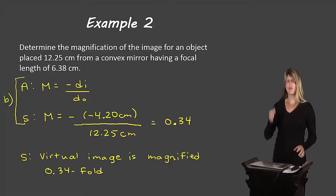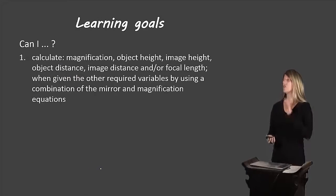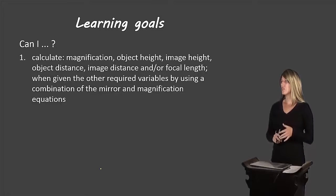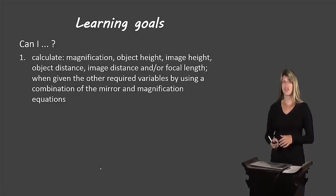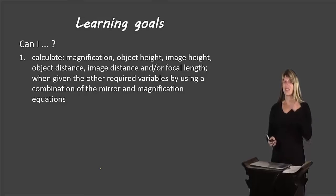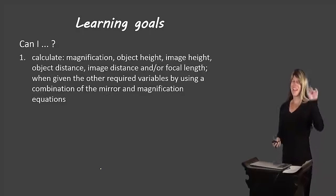That's how we solve problems like these. Looking back at our learning goal: you should be able to calculate magnification, object height, image height, object distance, image distance, and focal length when given the other required variables using a combination of the mirror equation and the magnification equation. If you can do this, fantastic. If not, please re-watch the video, and if you're still having trouble, come ask me in class tomorrow. That's all for now — bye-bye.